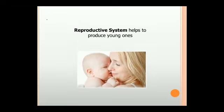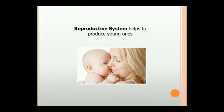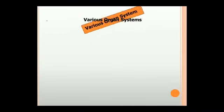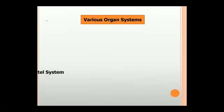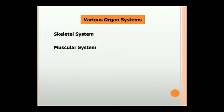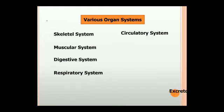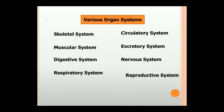The reproductive system helps to produce young ones. So children, now revise the various organ systems: skeletal system, muscular system, digestive system, respiratory system, circulatory system, excretory system, nervous system, and reproductive system. These different organ systems make up the human body.